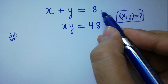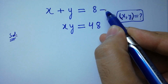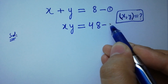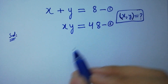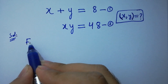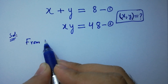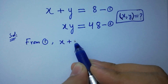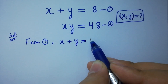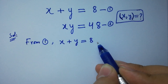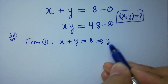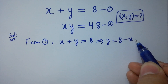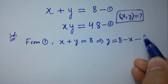Let x plus y equal to 8 be the first equation, and x times y equal to 48 be the second equation. From the first equation, we have x plus y equal to 8, then y equal to 8 minus x. Let this be the third equation.